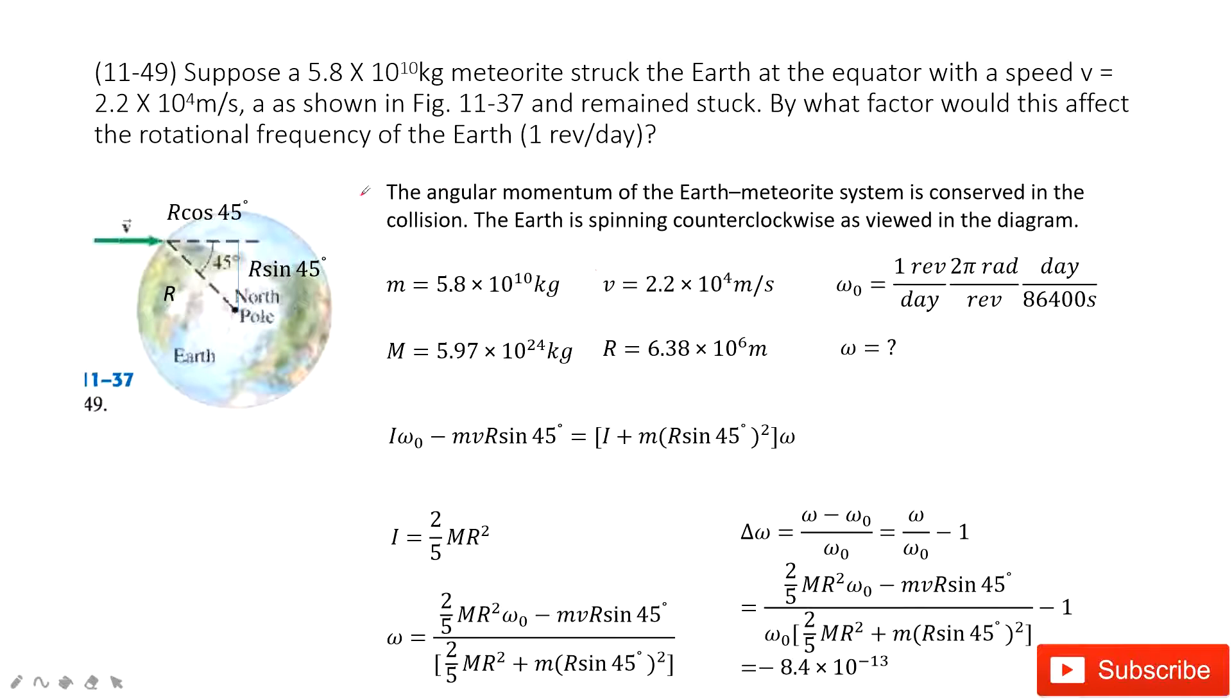In this problem, we look at this system. We have the object, and then it hit the earth. And this object's mass and velocity is given. And then where it hit the earth, it is 45 degrees. So we can get the radius.